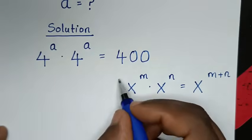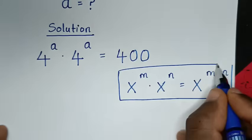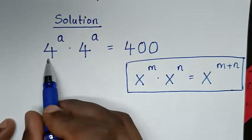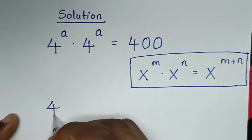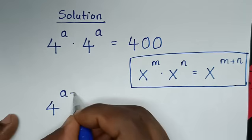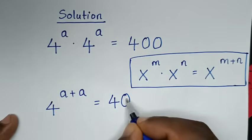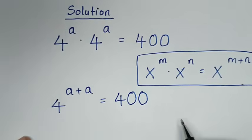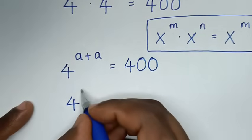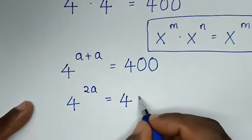So from this rule, we will apply this form. It will be 4 — same base of 4 — so we add the powers, and it will be a plus a. So here a plus a gives us 4 power of a plus a, which is 4 power of 2a, is equal to 400.